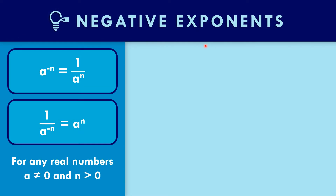In negative exponents: if the exponent is negative in the numerator, a to the negative n becomes 1 over a to the n. If the negative exponent is in the denominator, 1 over a to the negative n becomes a to the n, for any real number a not equal to zero and n greater than zero.